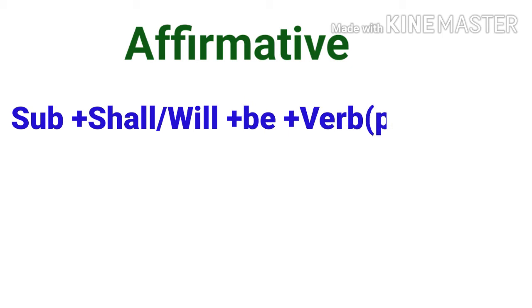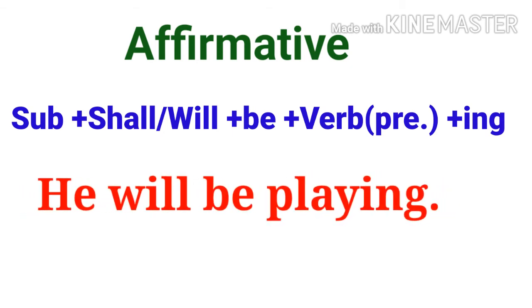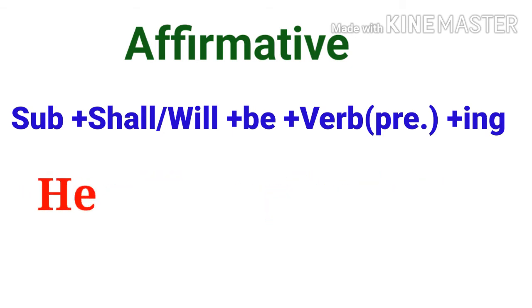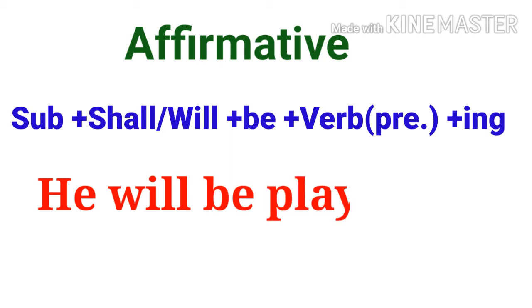Future Continuous Tense is affirmative. The formulation is: Subject plus shall/will plus be plus main verb in present form plus -ing. Example: 'He will be playing.' Here, 'He' is the subject, 'will' is the auxiliary verb, 'be' plus main verb 'play' — making 'playing.' So the sentence is: He will be playing.